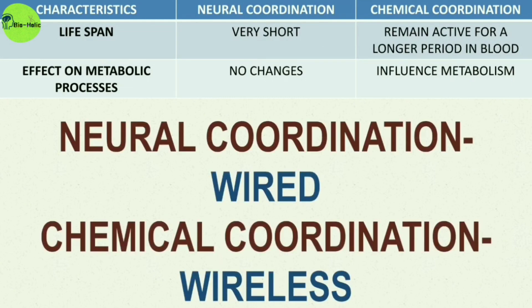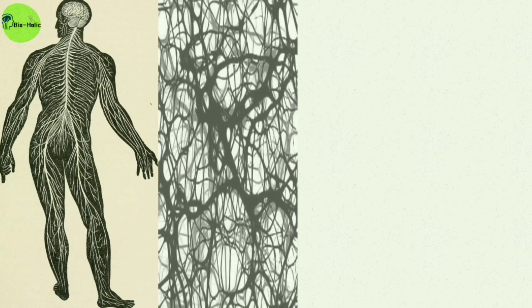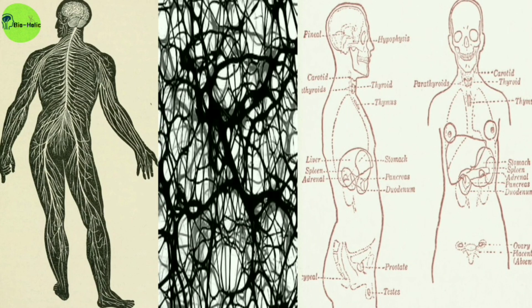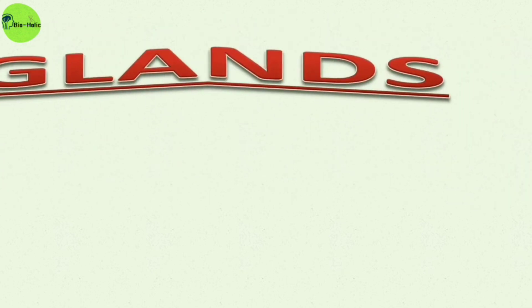In a nutshell, neural coordination is a wired coordination and chemical coordination is totally wireless. We can see the wired appearance of nerve fibers regulating neural coordination, and in chemical coordination, there are specific glands that secrete hormones — making those glands the main component of chemical coordination.